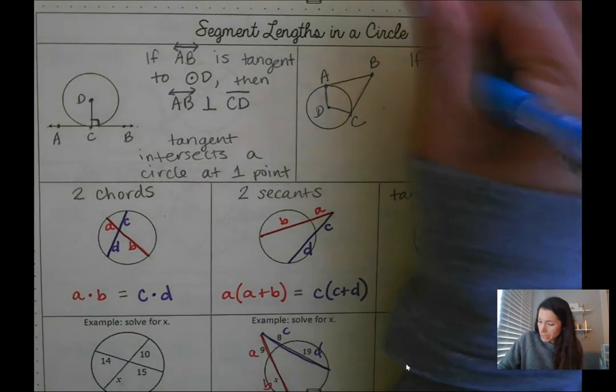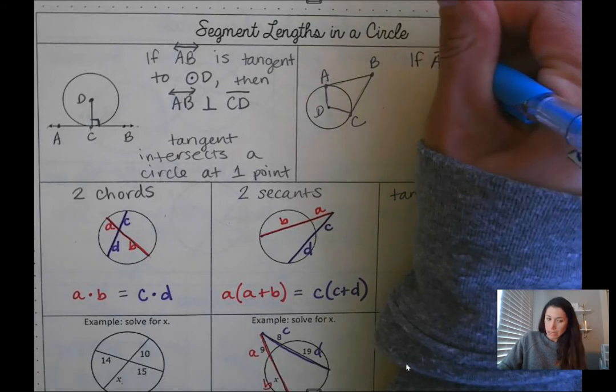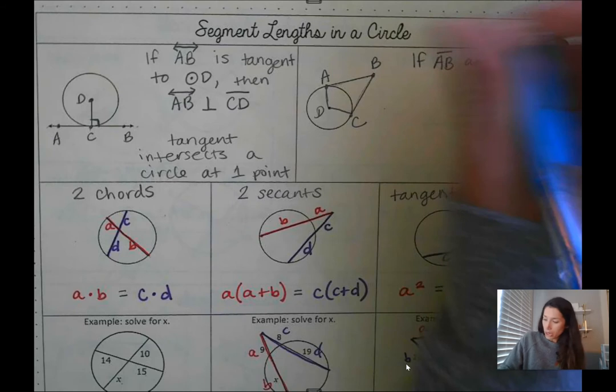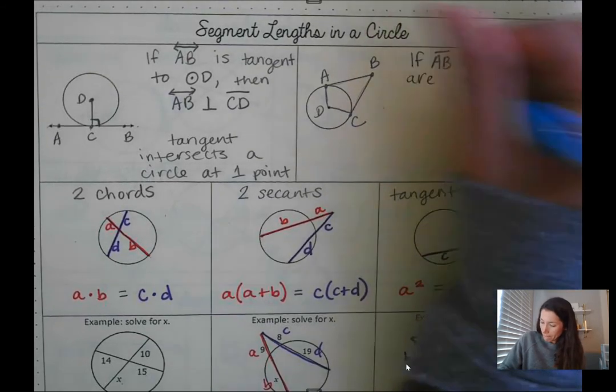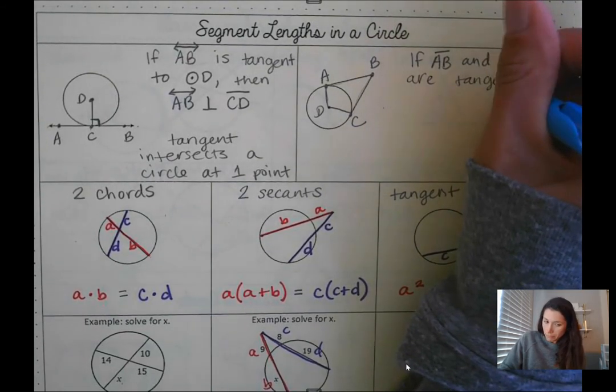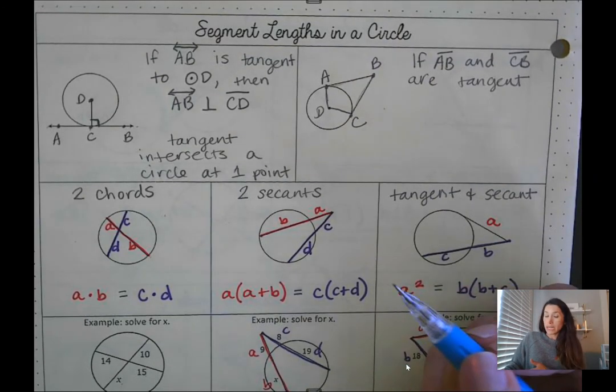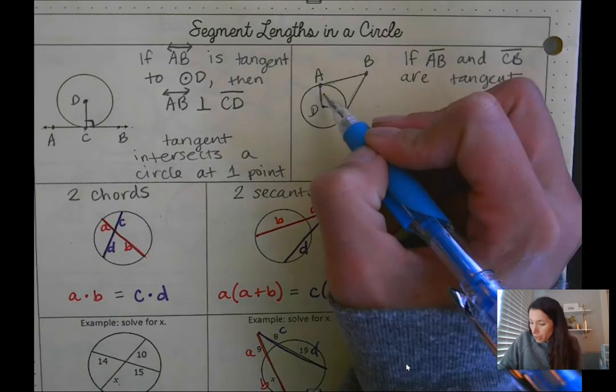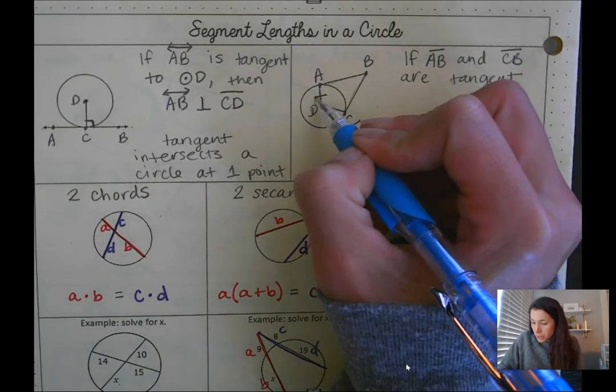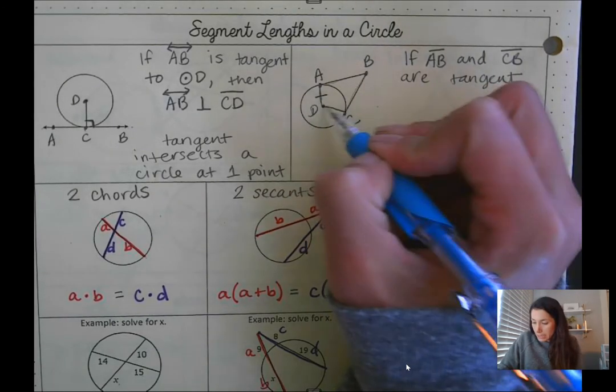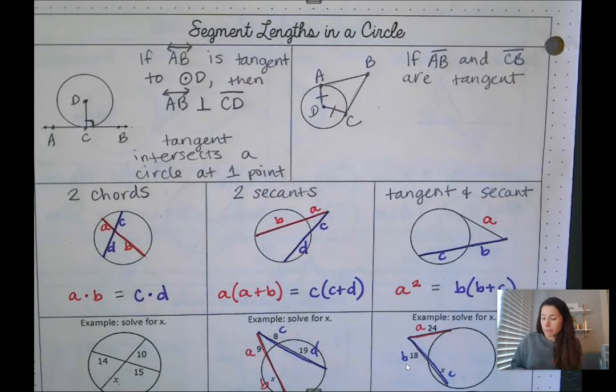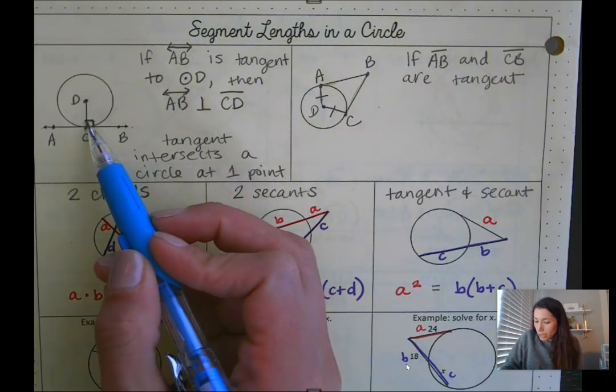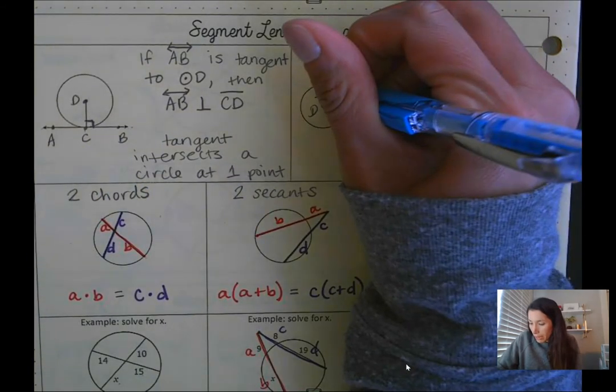So what we want to write is if AB and CB are tangent, what that's essentially creating is we're creating some congruent parts here. So since I said this was a radius from D to A and D to C, I'm going to put congruent marks on each of those. We also know that if they're tangent, they create a right angle.